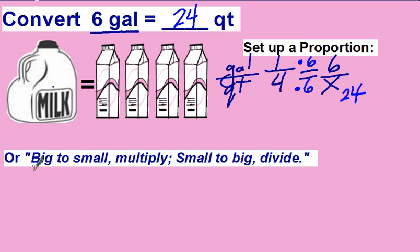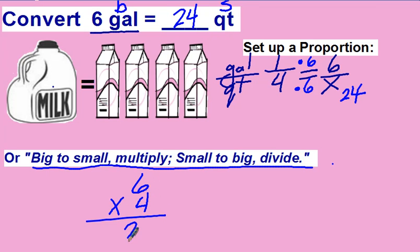Now once you know your relationships, you can also use the little phrase: big to small multiply, small to big divide. In this case, we're going from gallons, which is bigger, to quarts, which is smaller. So we go from big to small, and we're going to multiply 6 gallons times our relationship, which is 4. 4 quarts gives us 24 quarts.